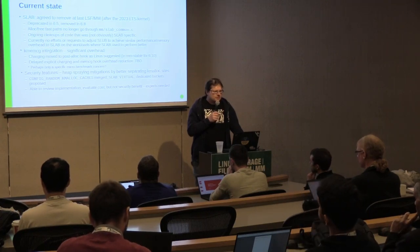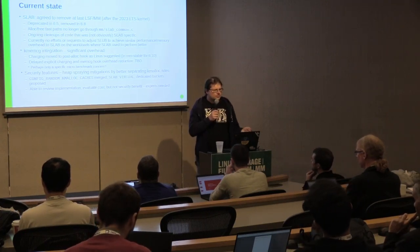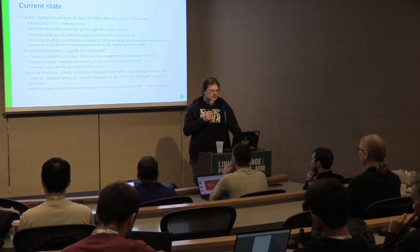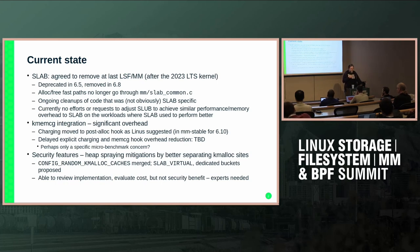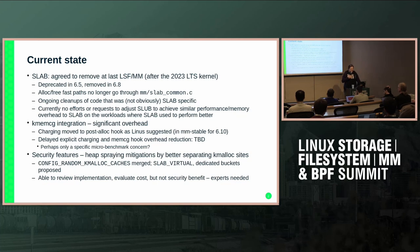With just one allocator left, we can now do new things without having to reimplement them across all three allocators or maintain a configuration subset compatible with all of them. Another immediate benefit is that some of the hot paths no longer have to go to the common layer, which is great because function calls are more and more expensive every day thanks to CPU vulnerabilities.